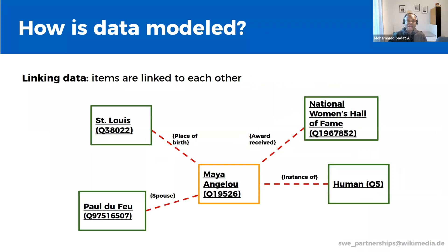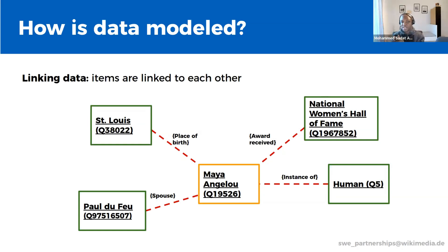The last part of a Wikidata triple is the value. For example, Maya Angelou's place of birth is Saint Louis, or Maya Angelou's award received is the National Women's Hall of Fame. These values themselves are often items with their own QIDs and their own statements describing them, making it possible for item A to be linked to item B to C and so on. However, not all values are items — for example, a date of birth or a quantitative value wouldn't necessarily be an item by itself.